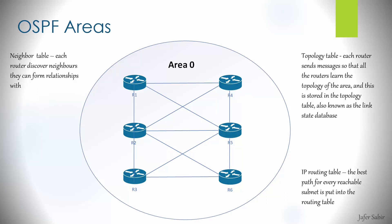Every router must hold the same topology database within an OSPF area, which is a lot of information. Each router must advertise its links to every other router — R1 needs to send advertisements about its links, and all other routers do the same. The bigger the area — meaning more routers — the more OSPF traffic is exchanged via link state advertisements, the larger the link state databases become, and the greater the performance issues. More routers means more changes, more OSPF traffic, and more table rebuilds.